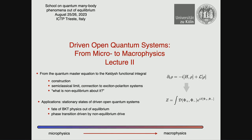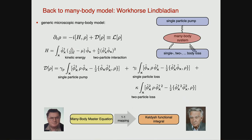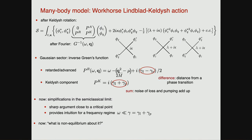Correlation functions encoded in G-Keldysh give us statistical properties — how modes are occupied and how strong are deviations from the deterministic configuration — while the response function gives spectral properties: how the system responds when we perturb it, with oscillations that then damp out. Now we move to a real many-body problem: this workhorse Lindbladian with kinetic energy and interactions, single-particle pumping, single-particle losses, and two-body losses.